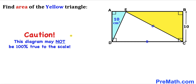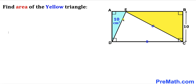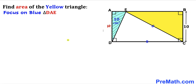Please keep in mind that this figure may not be 100% true to scale. Let's focus on rectangle ABCD. We know that this side length of the rectangle is 10 cm, so therefore this opposite side length has got to be 10 cm as well.